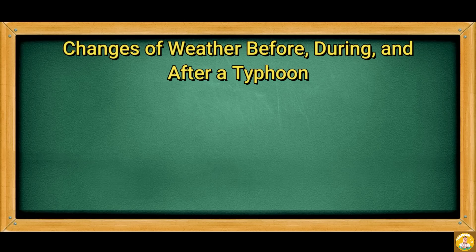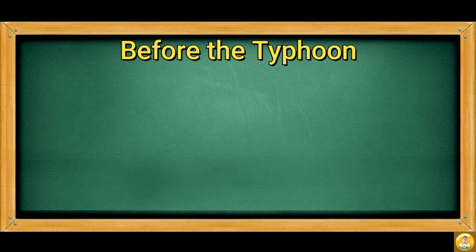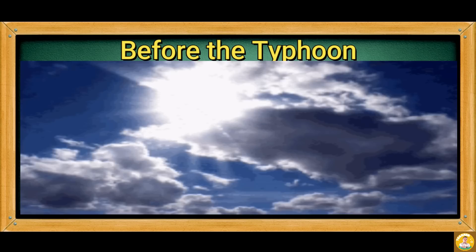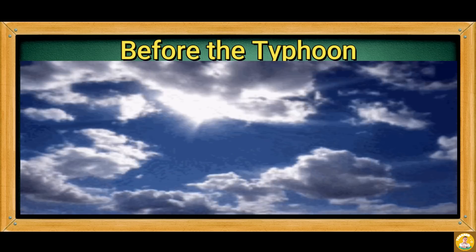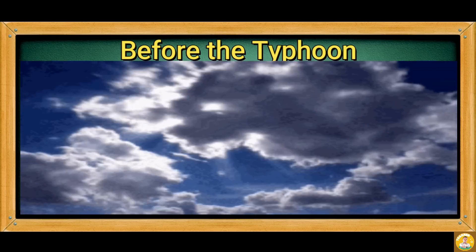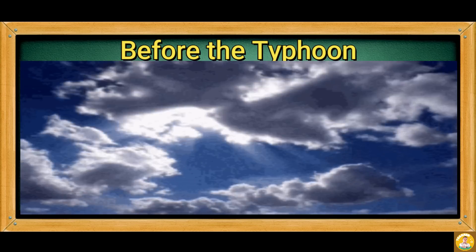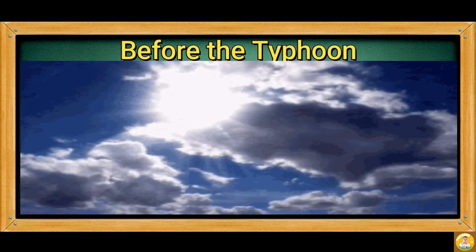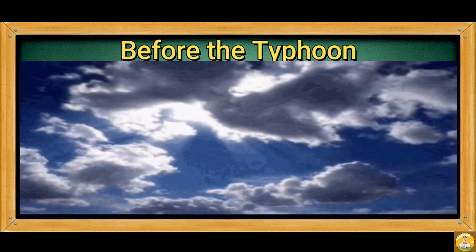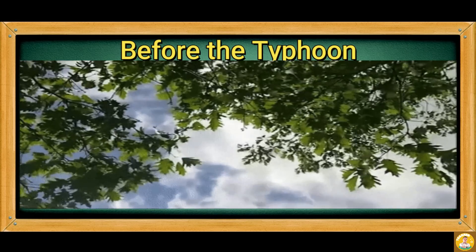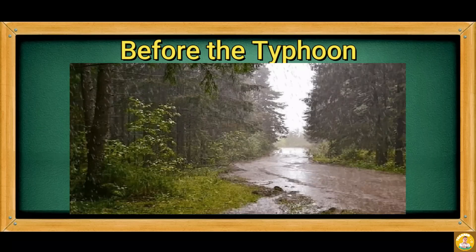Let's move to changes in weather before, during, and after a typhoon. Before the typhoon occurs, high clouds are observed in the sky. The air is dry and cold, since most of the warm air has already risen. The relative humidity is high, the wind blows gently, and scattered rain showers may occur.